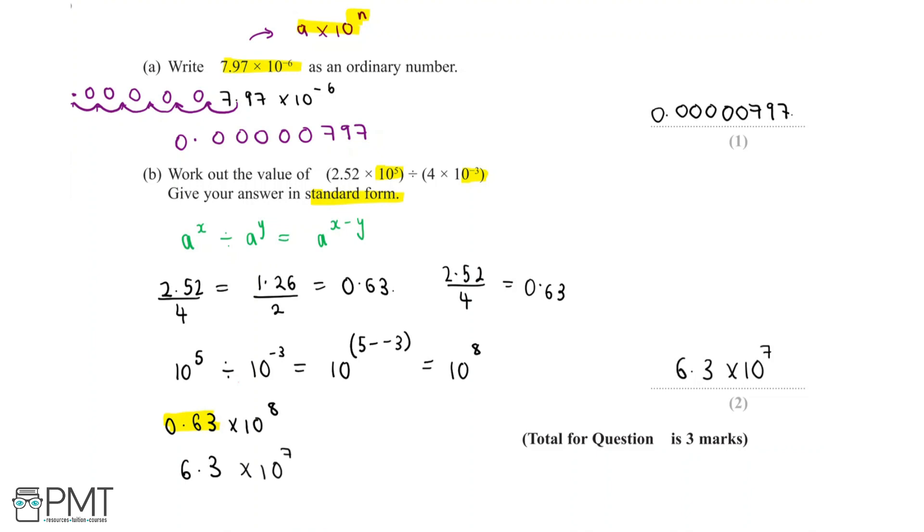This question is worth 2 marks. The first mark is allocated for using standard form, which can be seen here: 10^5 ÷ 10^-3 equals 10^8. The second mark is for getting the actual answer of 6.3 × 10^7.